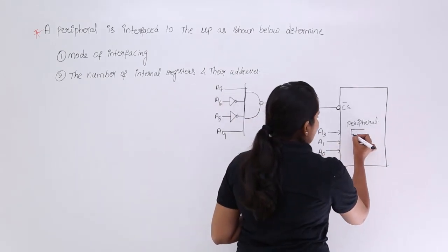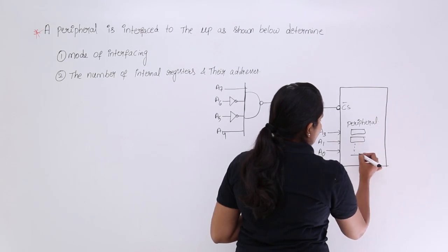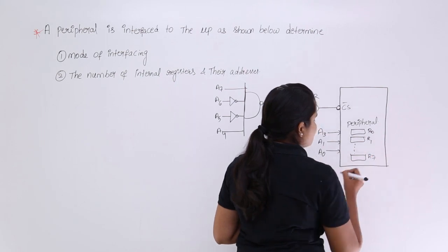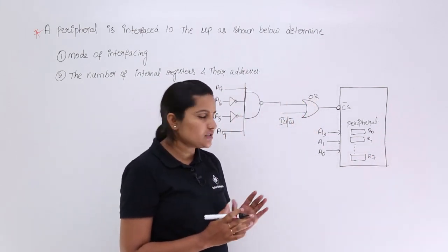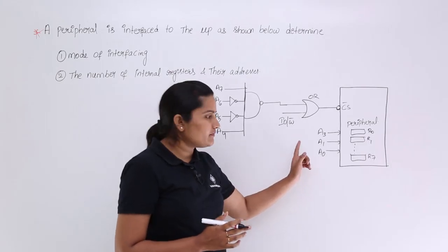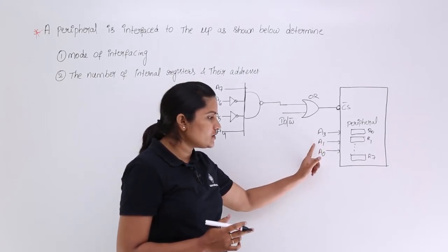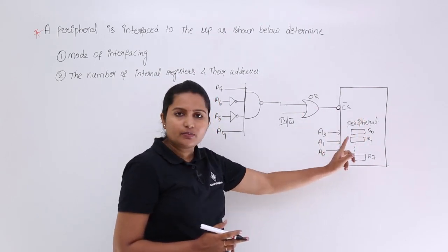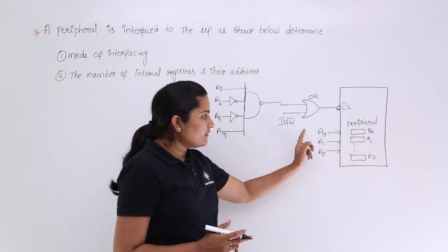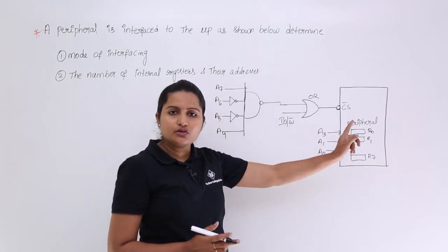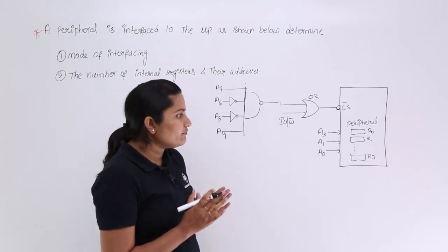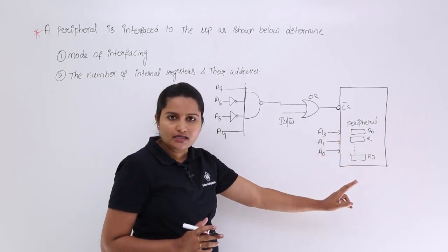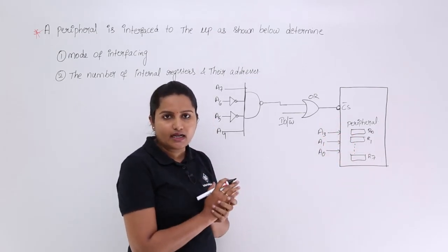So we have registers R0 through R7 — a total of 8 registers. For example, if you provide 000 on the address lines, it points to register 0; 001 points to register 1; 010 points to R2. Like that, we need to identify the actual address of R0, R1 up to R7 and write those addresses.